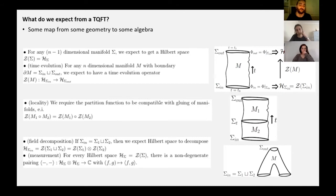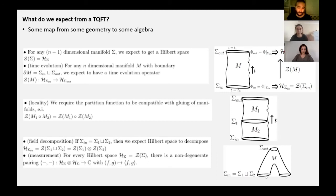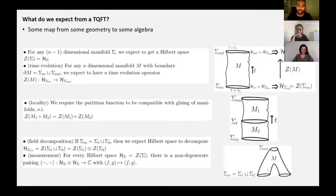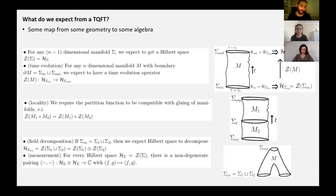Another thing we expect: if our incoming sigma_in is a disjoint union of two n minus one dimensional manifolds, then we expect our Hilbert space at that point to decompose as the tensor product of the two Hilbert spaces at each component. And lastly, we expect to have a non-degenerate pairing so that we can actually talk about measurement. This non-degenerate pairing is a map from the tensor product of Hilbert spaces to complex numbers.